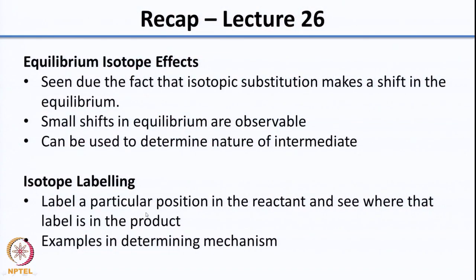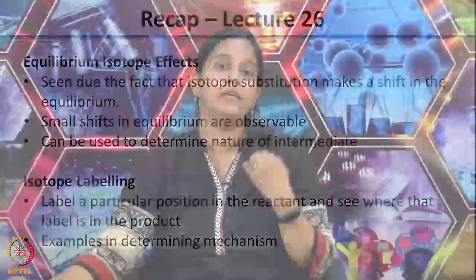Towards the end of the class we had started looking at the experiment called isotope labeling. Here, a particular position in the reactant is labeled and then we follow where the label goes in the product. We had looked at 2-3 examples of how this can be used to determine the mechanism.